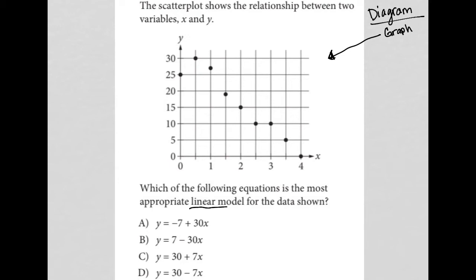Anytime I see linear model or linear with relationship to a graph, I am thinking y equals mx plus b, which is the slope intercept form of a line, where m represents the slope, which is rise over run, and the b value represents the y intercept.